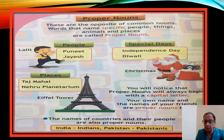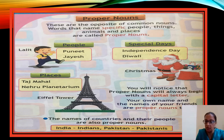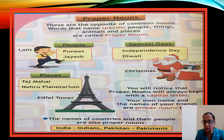The names of countries and their people are also proper nouns. For example, India and Pakistan — each country has its own specific name. People living in India are called Indians, people in Pakistan are called Pakistanis. These are particular names, so they are proper nouns.